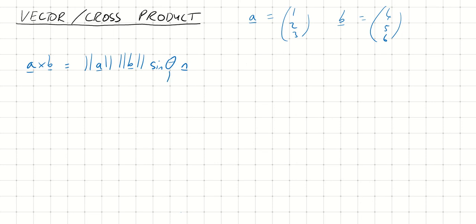Now magnitude of A would just be by 3D Pythagoras. Same for B. Sine theta. Well, theta is the angle between A and B. And this N is a unit vector, so a vector with magnitude 1 that is perpendicular to A and B.